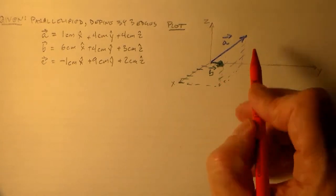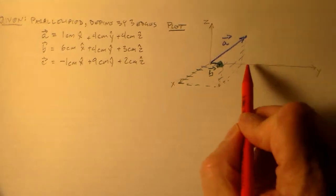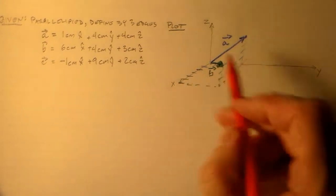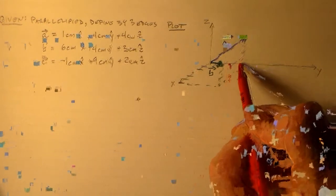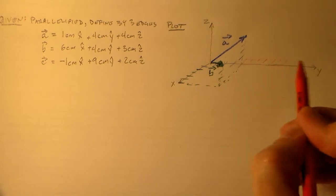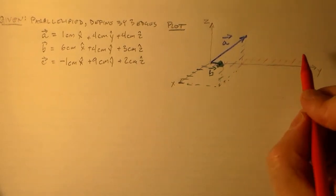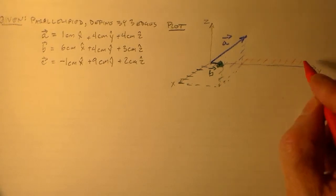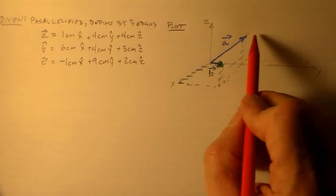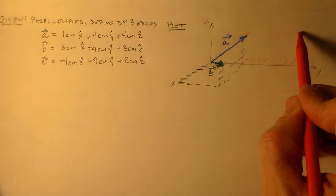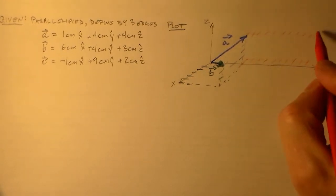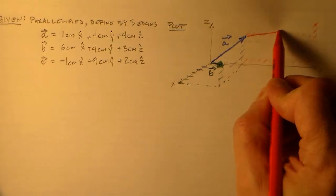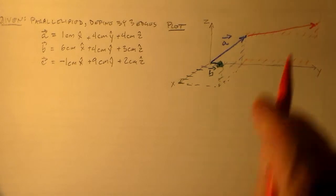Let's finish with vector C. We go minus one centimeter in x, then nine centimeters in the y direction, and up an additional two centimeters in z. So that's C — that's how we're thinking about these three vectors.